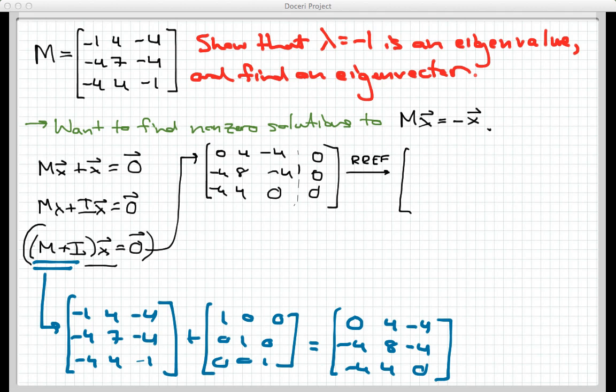And what we get when we row reduce here is 1, 0, minus 1, 0, and here's the partition. And then we have 0, 1, minus 1, 0, and then 0, 0, 0, 0.